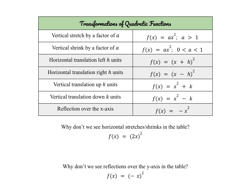Alright, so now let's move on to talking about transformations of our quadratic functions. These are the same transformations we've been talking about since the beginning of the chapter. We have vertical stretches and shrinks by a factor of a — that's when you're multiplying the entire function by a. If a is greater than 1, we call it a stretch. If a is between 0 and 1, we call it a shrink. Notice that a is always positive.